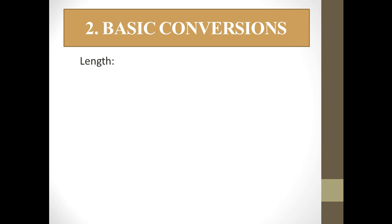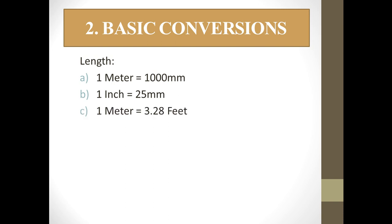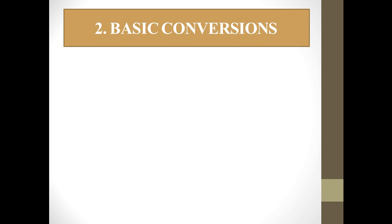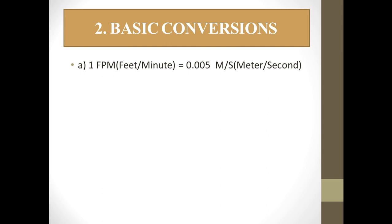Now let us look at basic conversions. For length: 1 meter = 1000 mm; 1 inch = 25 mm; 1 meter = 3.28 feet; 1 foot = 12 inches; 1 meter = 40 inches; 1 foot = 300 millimeters; 1 foot = 0.3 meters.